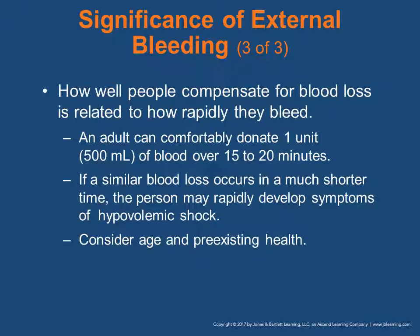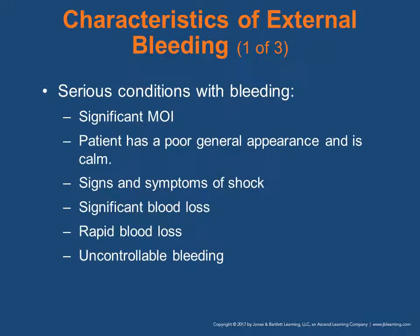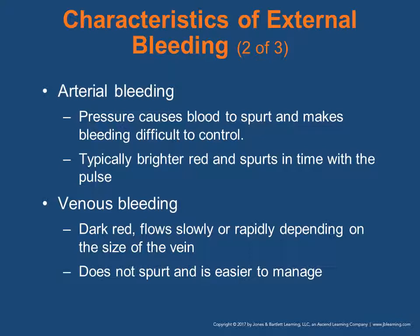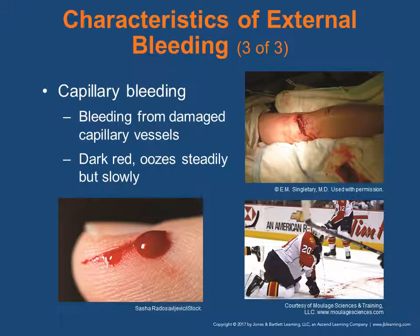Characteristics of external bleeding include a significant mechanism of injury, poor general appearance with the patient appearing calm, signs and symptoms of shock, significant blood loss that was rapid and uncontrollable. Arterial bleeding: pressure can cause blood to spurt and makes bleeding difficult to control; it is typically brighter red and spurts in time with the pulse. Venous bleeding is dark red, flows slowly or rapidly depending on the size of the vein, does not spurt, and is much easier to manage. Capillary bleeding is from damaged capillary vessels; it is dark red and continues to ooze steadily but slowly.